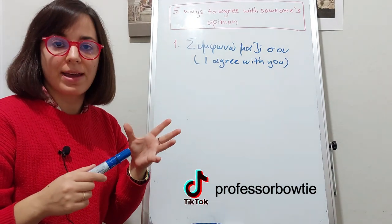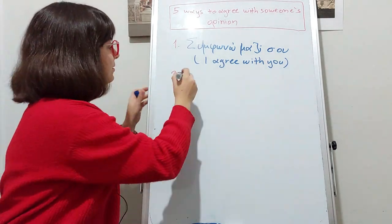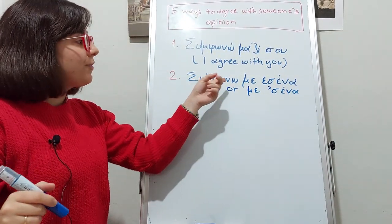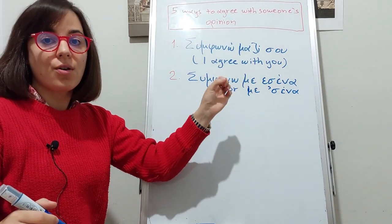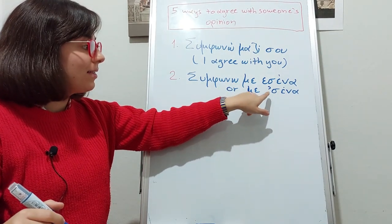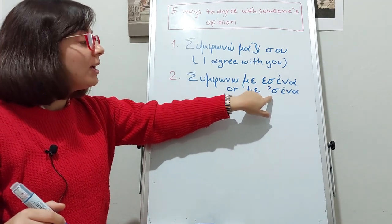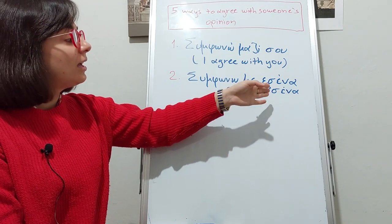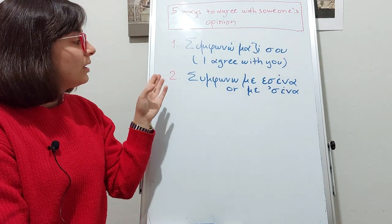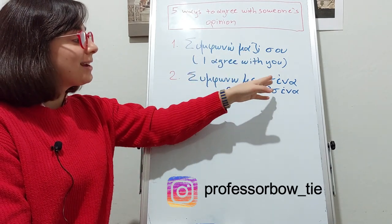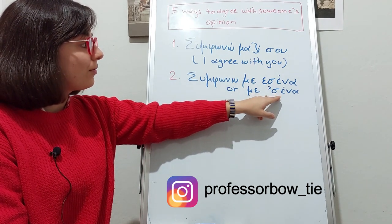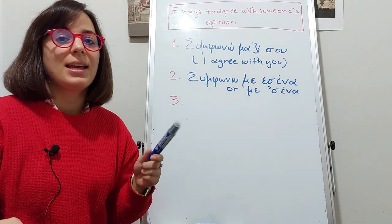The second way is a similar way: Συμφωνώ με σένα — or better, Συμφωνώ με σένα, omitting the first letter, the epsilon letter. Because we have two epsilons and it creates hiatus, and we don't want to have two vowels together. Συμφωνώ μαζί σου, Συμφωνώ με σένα — I agree with you, changing a little bit this personal pronoun.